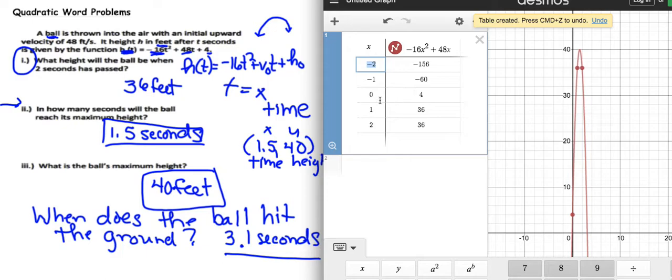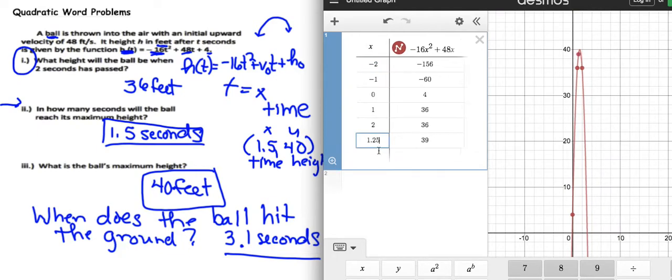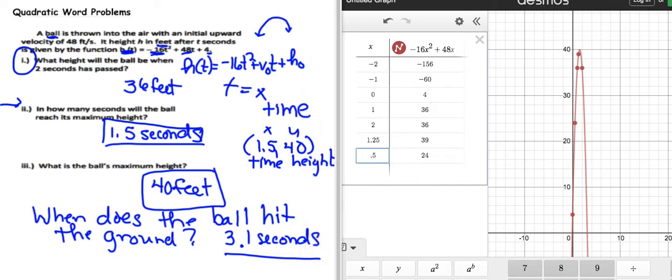So you click in here, and see where it says two? Two thirty-six. So you could put any number in here. Like, if you wanted to put one point two five, at one point two five it's thirty-nine. Which makes sense, because it's like right before it gets to the maximum height. You wanted to find out like a half, you get on here and put at point five seconds, it's at twenty-four feet. And it also shows you where it is on the graph. So that's when you have projectiles, and you definitely need to use your calculator for the projectile problems.